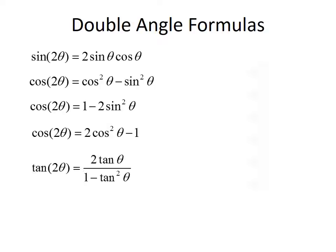Finally, the double angle formula for tangent says that the tangent of 2 theta equals 2 times the tangent of theta divided by 1 minus tangent squared theta.